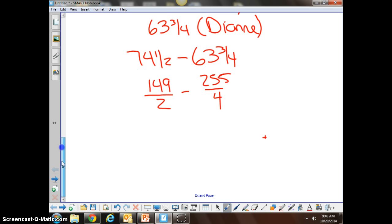I need to get common denominators so I can subtract. I know that 4 is the least common multiple for both 4 and 2. So we've got 255/4ths right here. We've got 2 times 2, which is 4, so 149 times 2 is 298. Now that I have common denominators, I can subtract. 298 minus 255 leaves me with 43 left over for my numerator, and 4 is my denominator.